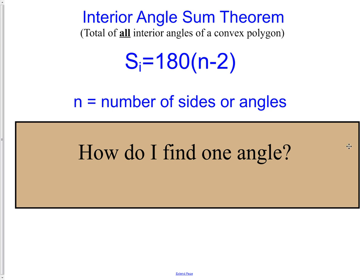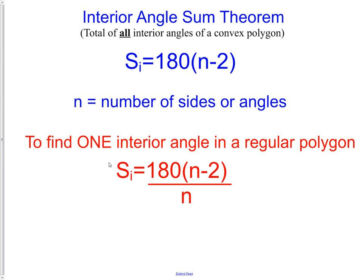A related question is: how do I find just one interior angle? We really talk about this specifically for regular polygons, where all sides and angles are the same. We use the formula S = 180(n − 2), then simply divide by the total number of angles. For a 12-sided figure, we take 180 times (12 minus 2) to get 1800, then divide by 12.